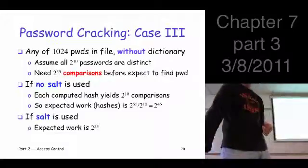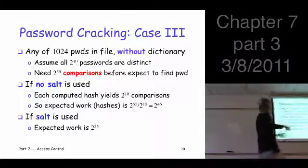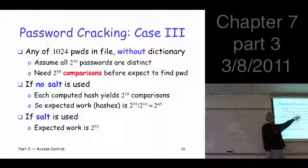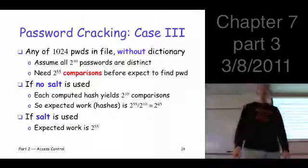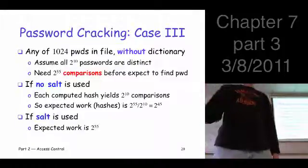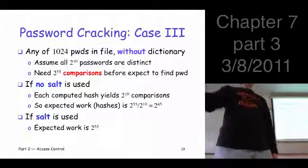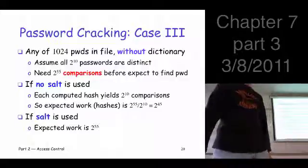I have to do 2 to the 55 hashes. So salting, at least in this case, is good. It increases the work factor for Trudy. But of course Trudy would use her dictionary. She wants any password in the file and she wants to use her dictionary.